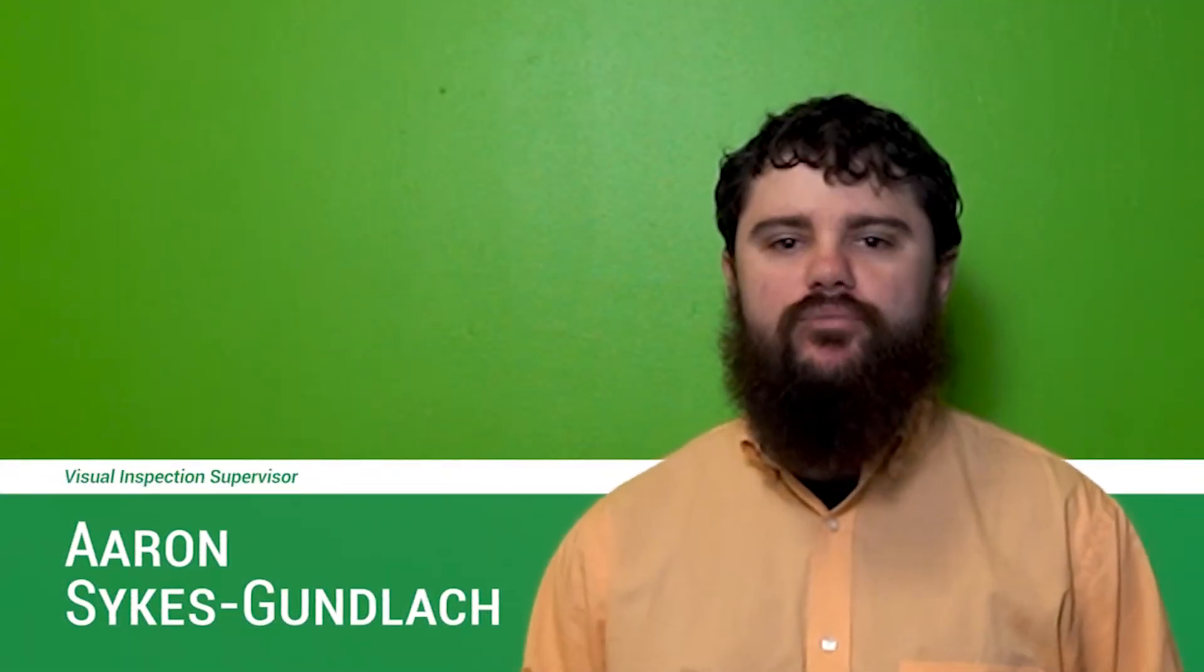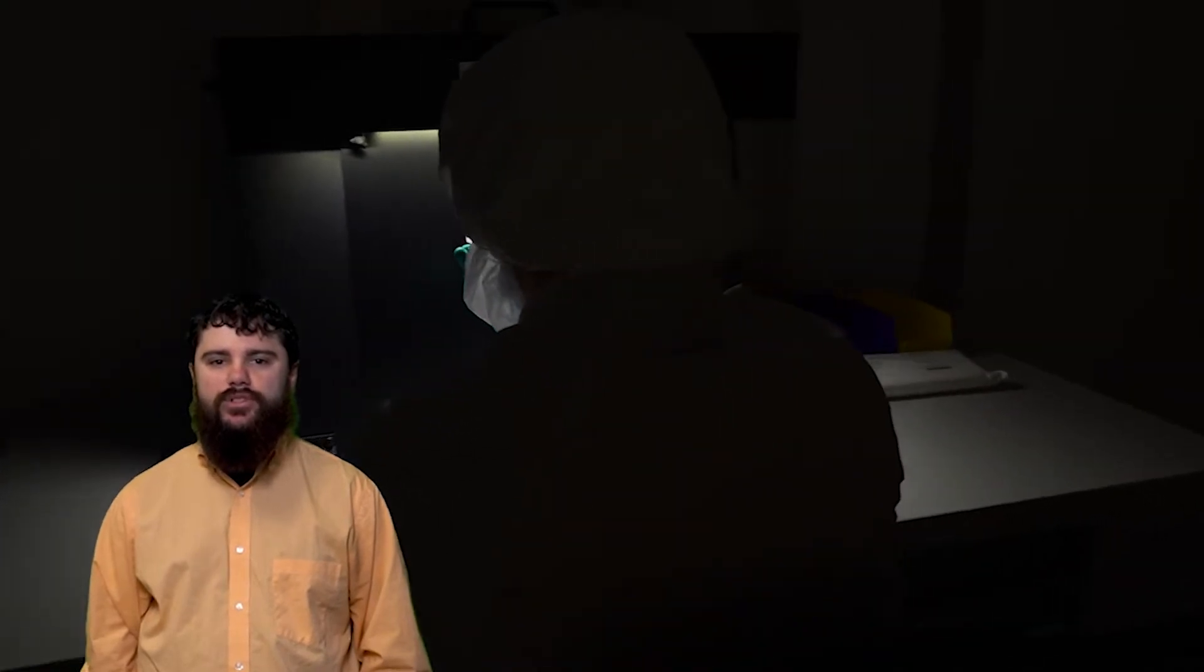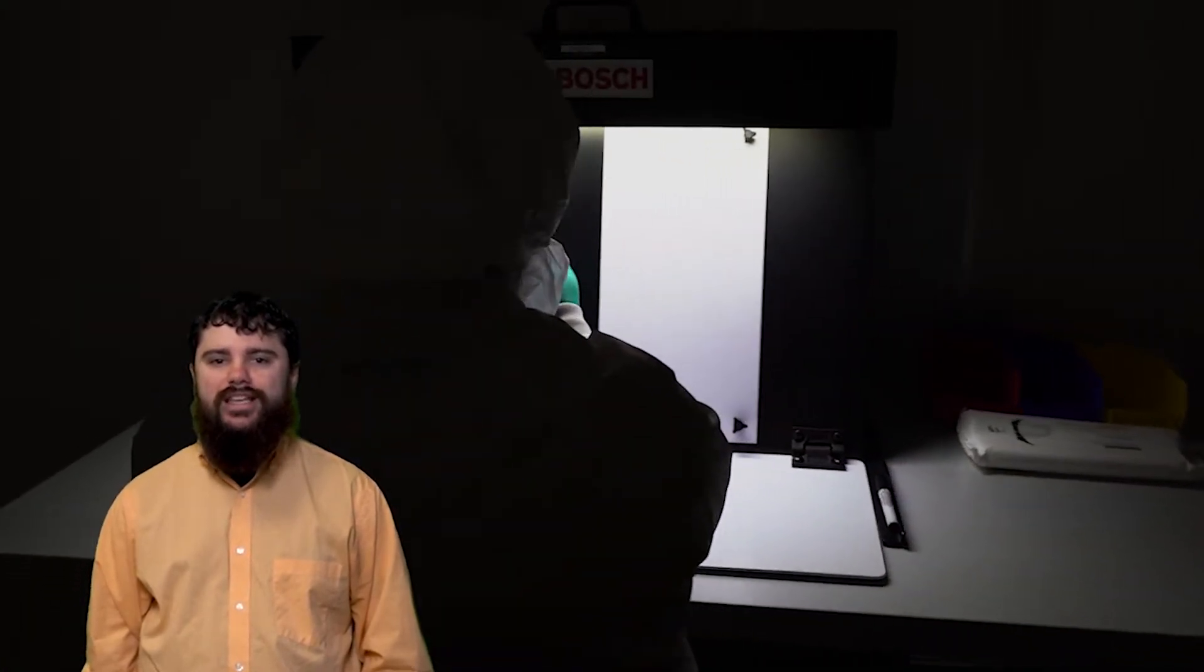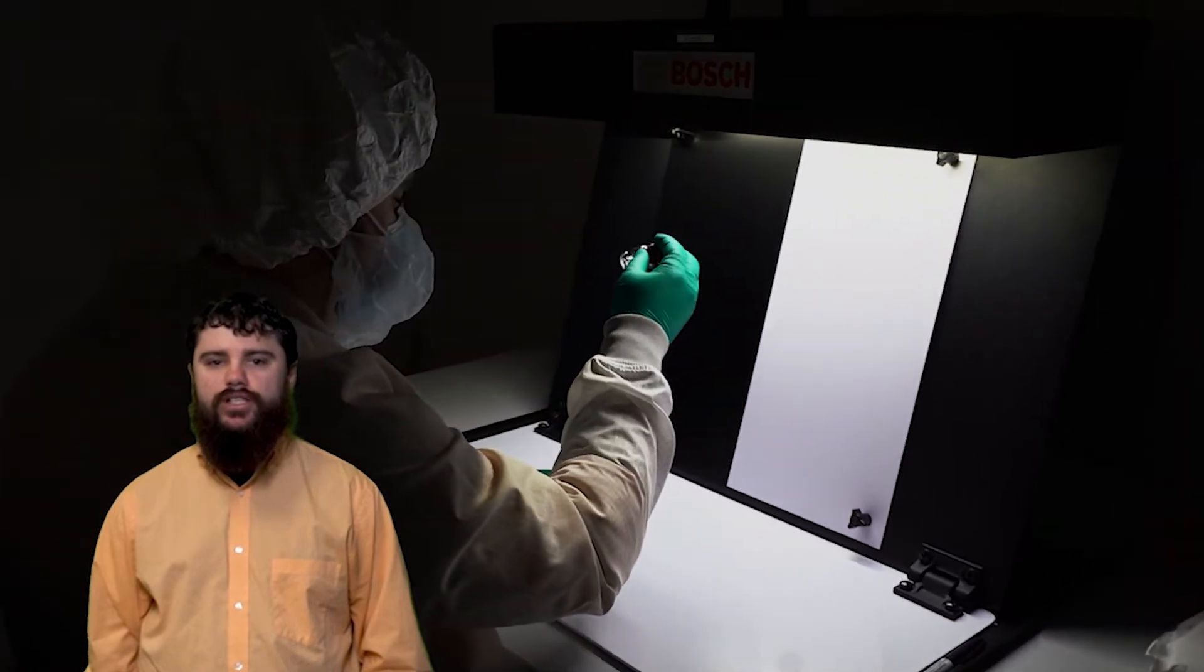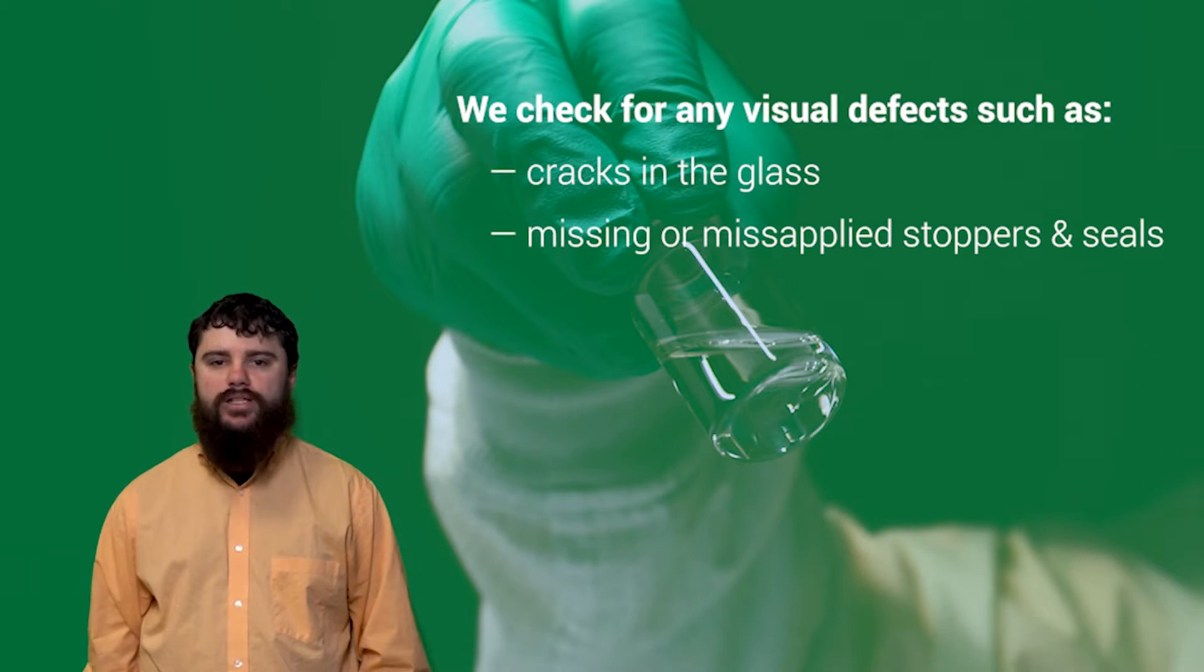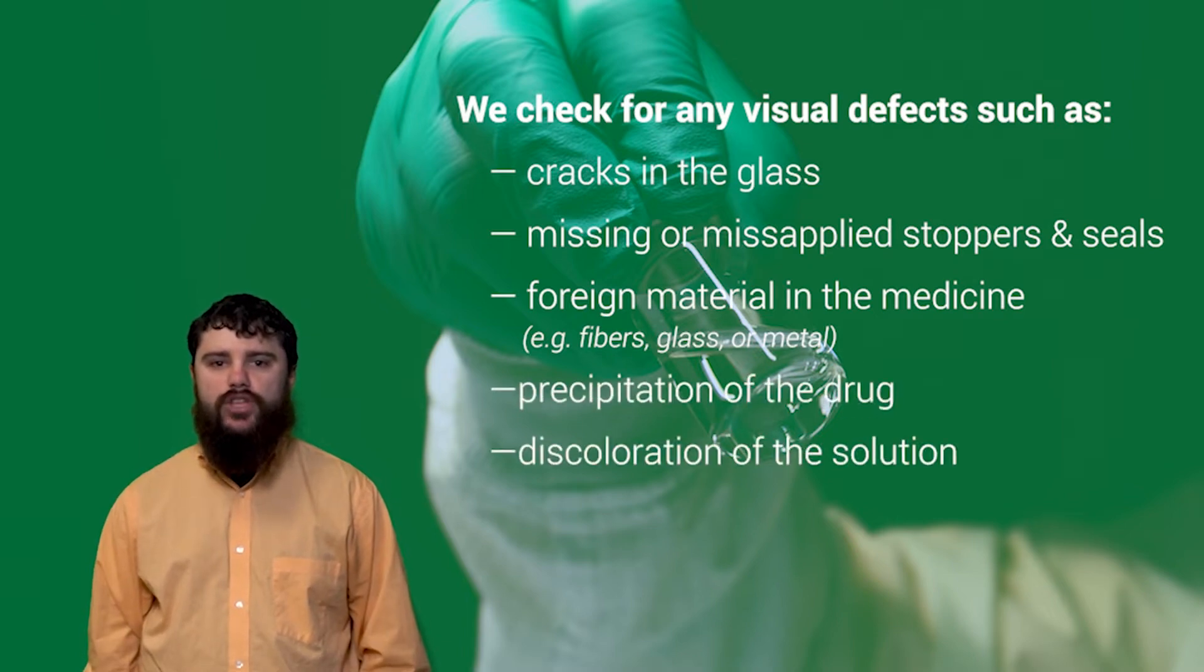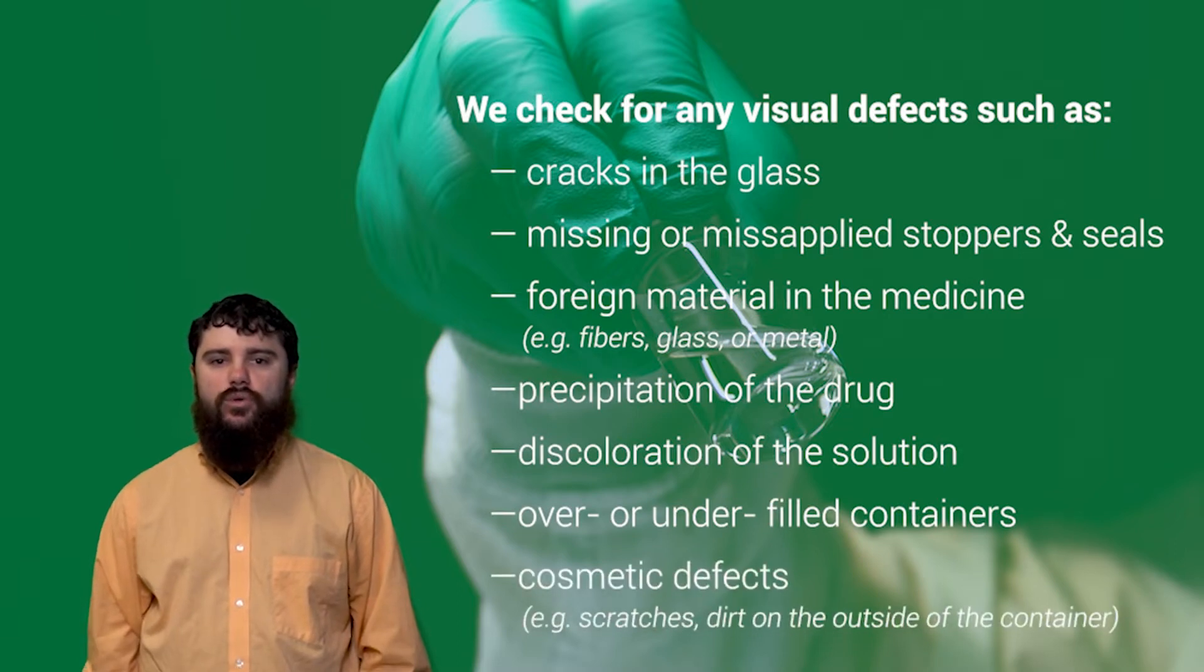Hi, I am Aaron Gunland. I am the supervisor of the Visual Inspection Group at BSM, and have been a member of the BSM team for three years. Welcome to Visual Inspection. While we perform testing in the lab to ensure that the medicine we make is sterile and has the correct specifications, we also need to check for any critical defects, like cracks in the glass of vials, missing or misapplied stoppers and seals, foreign material in the medicine such as fiber, glass, or metal, precipitation or discoloration of the solution, over or under-filled containers, and cosmetic defects such as scratches or dirt on the outside of the container. That is our job!